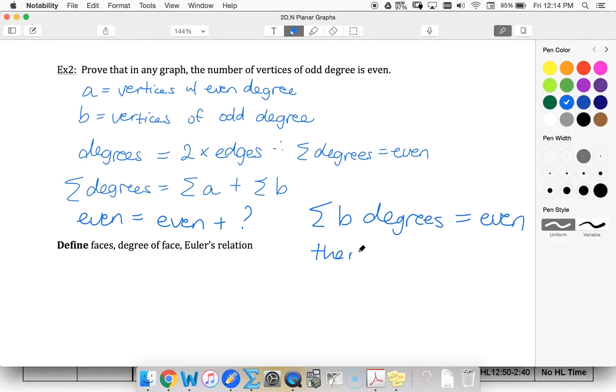So there must be an even number of odd degree vertices.